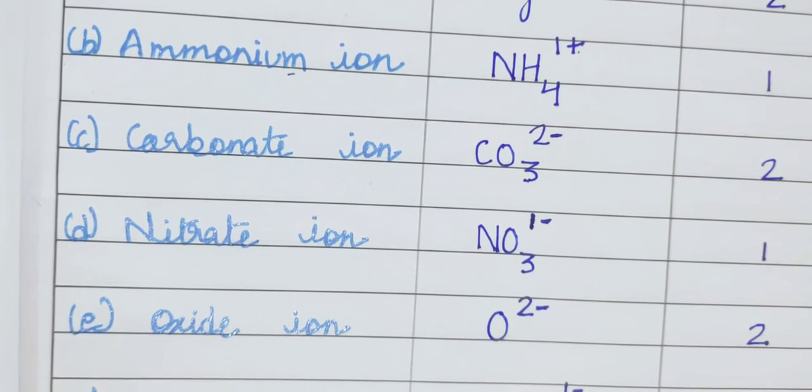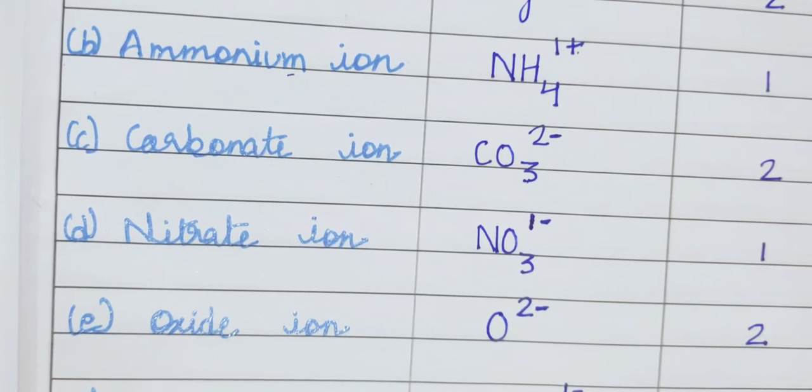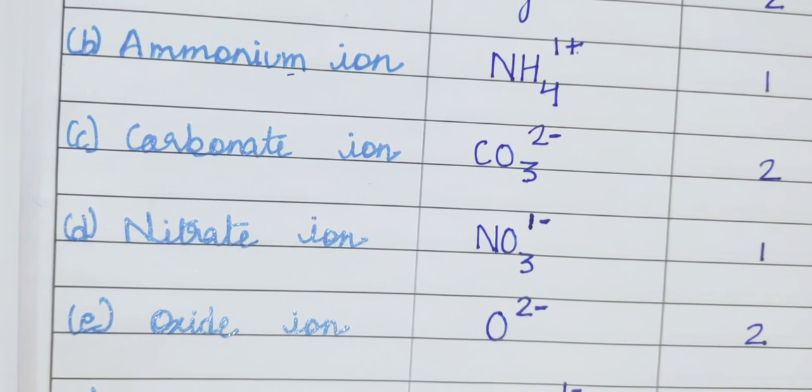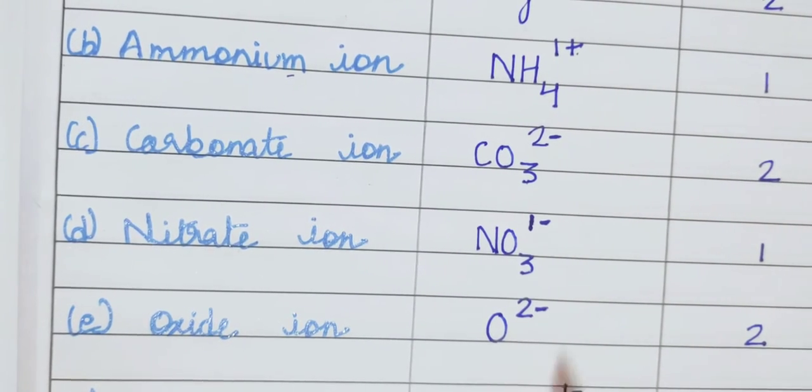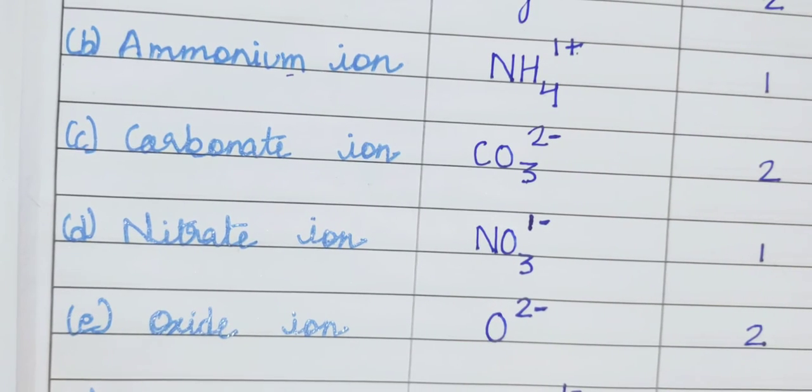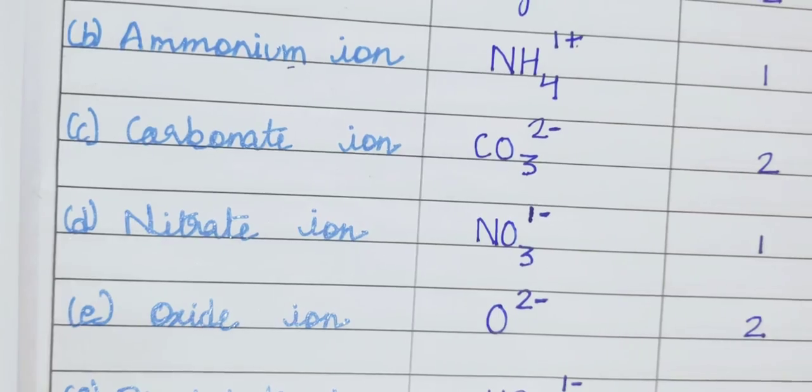Similarly HSO4, why 4 here? Because in bisulfate ion, it is a radical, it has 1 hydrogen atom, 1 sulfur atom and 4 oxygen atoms. Similarly you can see aluminium. AL is the symbol. 3 plus is the valency. Thank you.